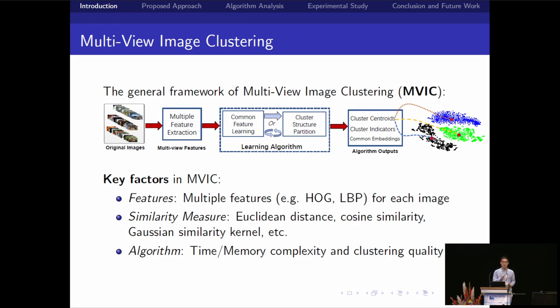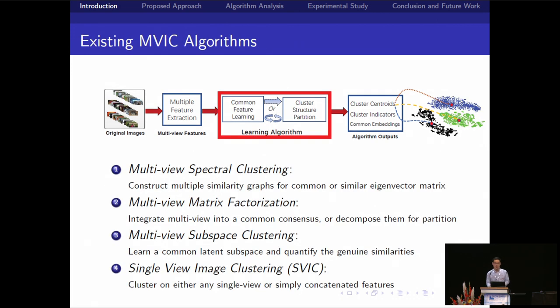There are three very important factors in multi-view image clustering. If you use different features, you may have different direct influence on the final image cluster results or performance. The similarity measurements - you use different similarity metrics to measure the similarities and the distance from images. So it's very important for multi-view image clustering. And when it comes to algorithms, we must be concerned about the performance, cluster quality, and the time and memory complexity.